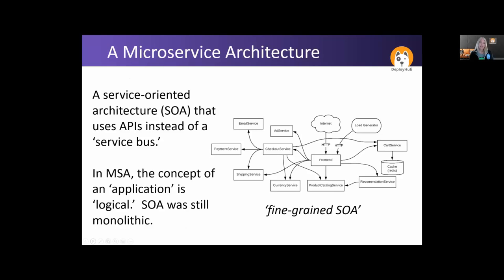Since this is a CNCF webinar, a service-oriented architecture and a microservice architecture are sometimes interchanged, but there are subtle differences. A service-oriented architecture is still monolithic, and an SOA uses APIs to build out your architecture but also uses a service bus for those APIs to connect. A microservice architecture is truly a decomposed architecture where the concept of an application goes away and you start managing microservices instead. We often call a microservice architecture a fine-grained SOA.